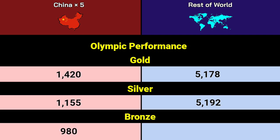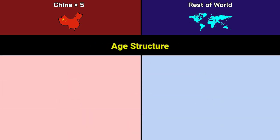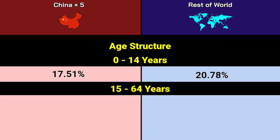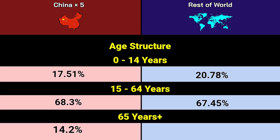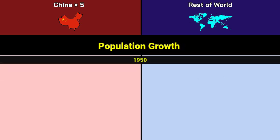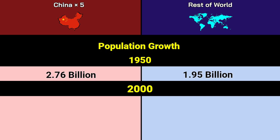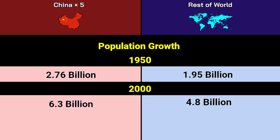Age structure — 0 to 14 years: China 17.51%, Rest of World 20.78%. 15 to 64 years: China 68.3%, Rest of World 67.45%. More than 65 years: China 14.2%, Rest of World 11.78%. Population growth — 1950: China 2.76 billion, Rest of World 1.95 billion. 2000: China 6.3 billion, Rest of World 4.8 billion.